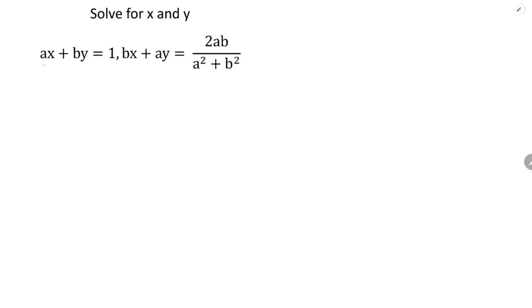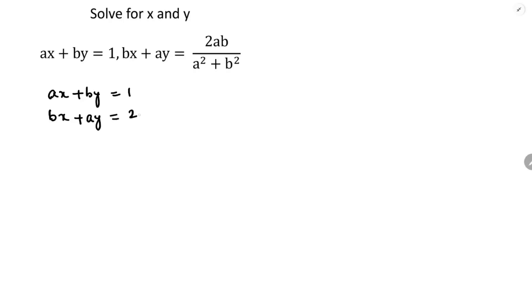Solve for x and y. The two equations are: ax plus by equals 1, and bx plus ay equals 2ab by a square plus b square.